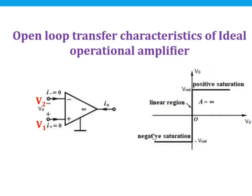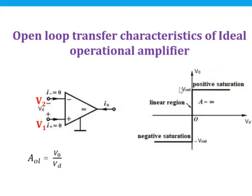The output expression of an operational amplifier in open-loop configuration is V0 equal to AOL times Vd, from which AOL gain equals V0 divided by Vd. In an ideal operational amplifier the gain is infinity, so Vd is almost zero. Due to this high gain, the operational amplifier gets saturated and the output voltage is either plus V-saturation or minus V-saturation. This V-saturation depends upon the supply voltage applied to the operational amplifier.